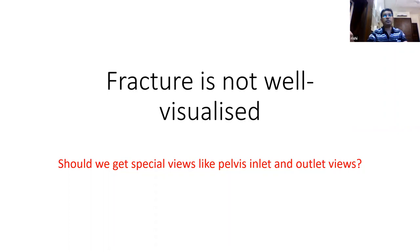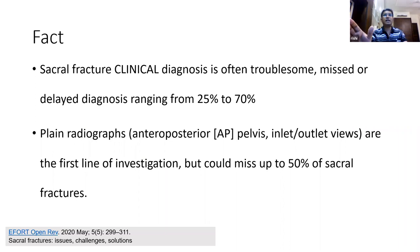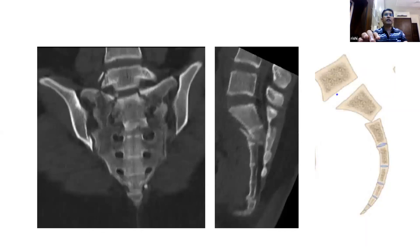So what should be the next ideal step? Should we get special pelvic inlet and outlet views? Actually not, because many studies show that the clinical diagnosis of a sacral fracture is very troublesome. In patients with co-existent head injury or severe chest and abdominal injuries, diagnosis can be missed or delayed in up to 70% of cases. Plain and special views like inlet and outlet views can miss the fracture in up to 50% of situations. Whenever you suspect a sacral fracture, there is no point delaying further investigation — we should have a low threshold to get a CT scan.